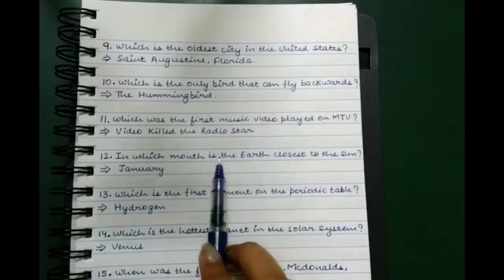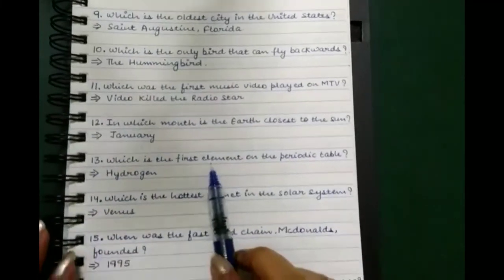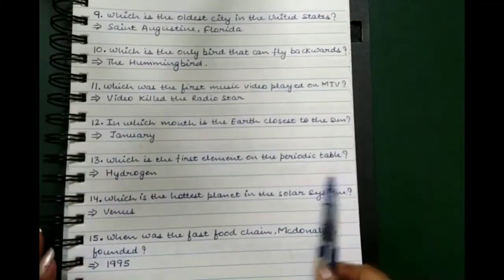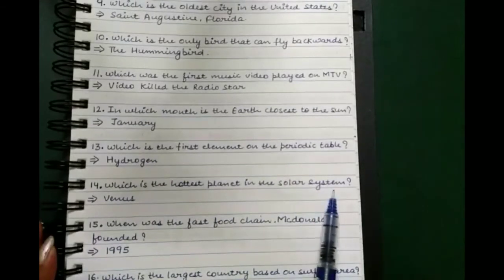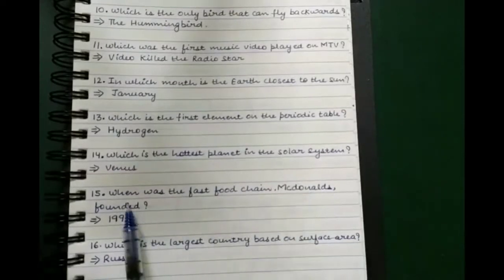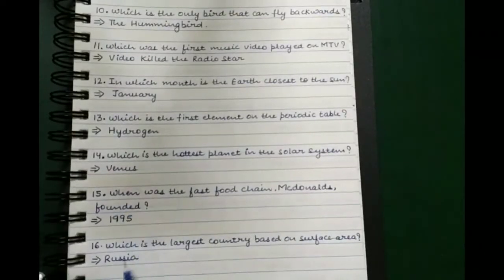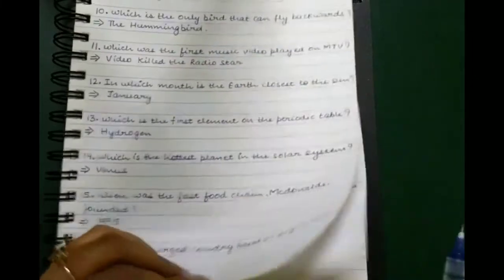Which was the first music video played on MTV? Video Killed the Radio Star. In which month is the earth closest to the sun? January. Which is the first element on the periodic table? Hydrogen. Which is the hottest planet in the solar system? Venus.